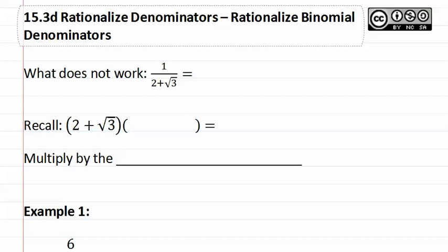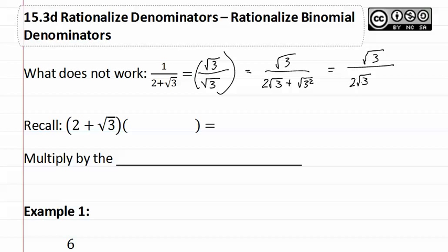First let's look at what does not work. If we have this, we cannot simply just multiply by the missing three, because this will give us the square root of three over two square root of three plus the square root of three squared, which is square root of three over two square root of three plus three. As you can see, the root did not come out of the denominator, so this does not work.